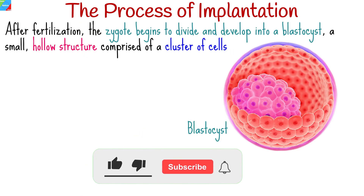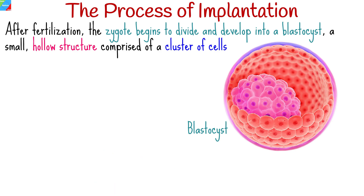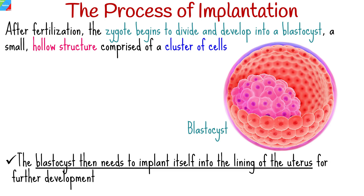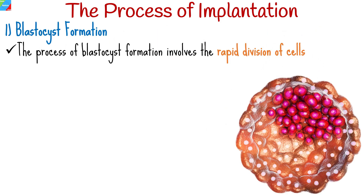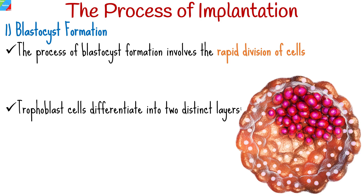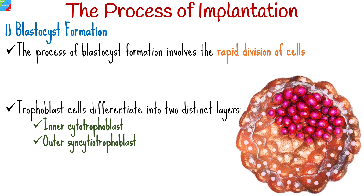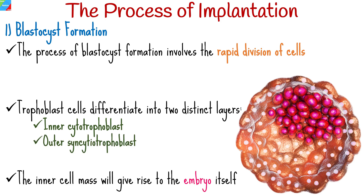After fertilization, the zygote begins to divide and develop into a blastocyst, a small hollow structure comprised of a cluster of cells. The blastocyst then needs to implant itself into the lining of the uterus for further development. The process of blastocyst formation involves the rapid division of cells. As the blastocyst develops, the trophoblast cells differentiate into two distinct layers: the inner cytotrophoblast and the outer syncytiotrophoblast. The inner cell mass will give rise to the embryo itself.